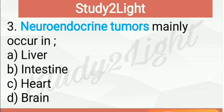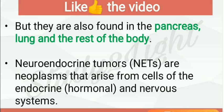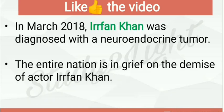Next question: Neuro endocrine tumors mainly occurring in — so neuro endocrine tumors mainly occur in the intestine, so B is the right answer. They are also found in the pancreas, lungs, and rest of the body, but mainly occur in the intestine. Neuro endocrine tumors are neoplasms that arise from cells of the endocrine, hormonal, and nervous systems. This was in news because in March 2018, Irrfan Khan was diagnosed with a neuro endocrine tumor.